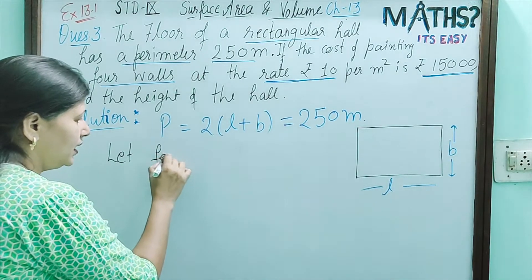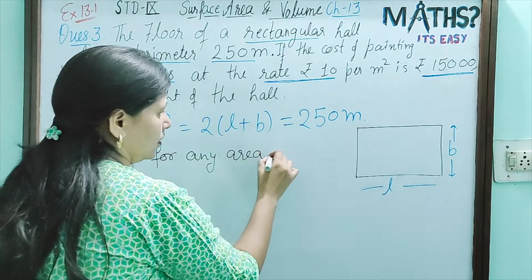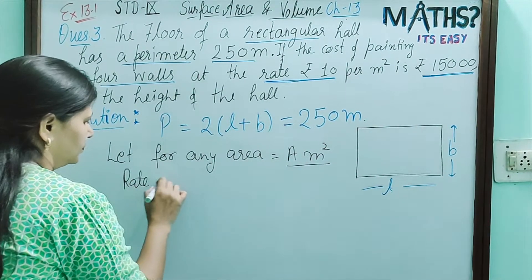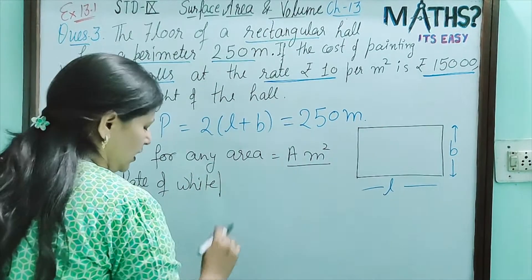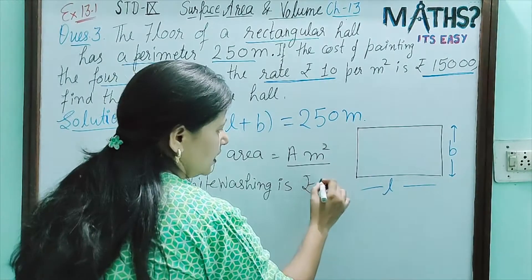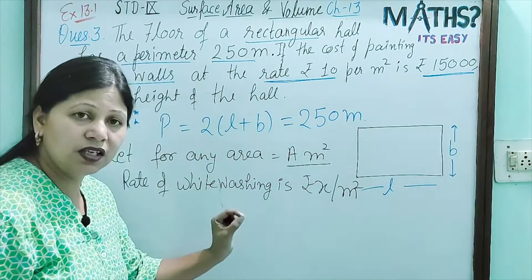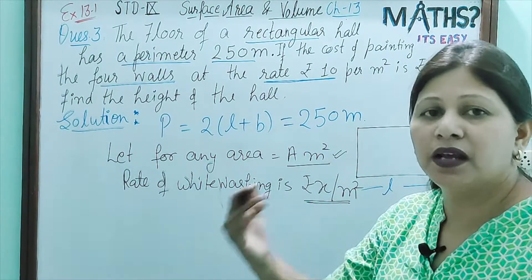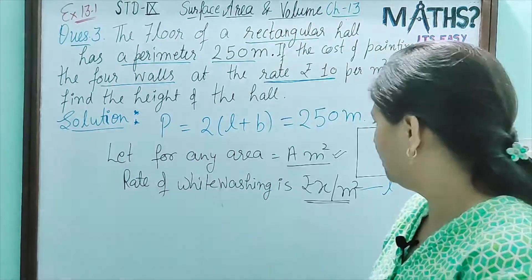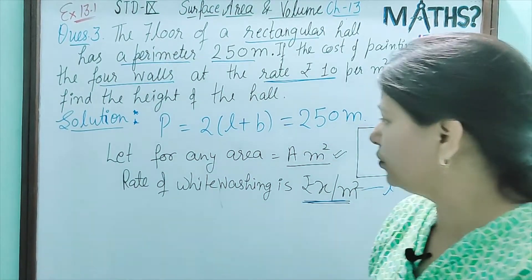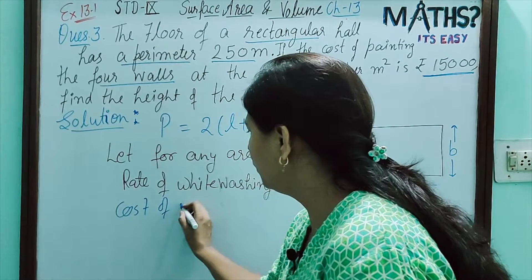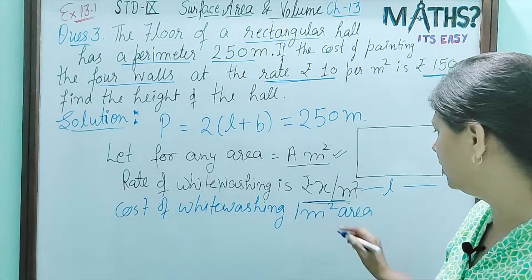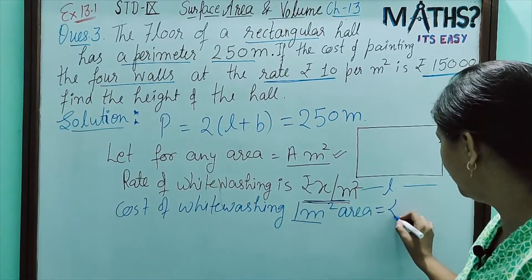Let us consider any area, say 8 metre square. We have considered this area, and the rate of painting is rupees X per metre square. In this situation, how will you calculate total cost? If area is given and rate is rupees X per metre square, we simply use the unitary method. Cost of whitewashing 1 metre square area is rupees X.